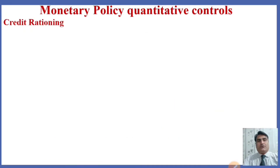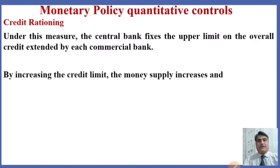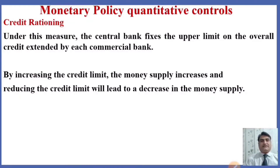Another tool of quantitative control is credit rationing. Under this measure, the central bank fixes the upper limit on the overall credit expansion by each commercial bank. By increasing the credit limit, money supply increases; reducing the credit limit leads to a decrease in money supply.